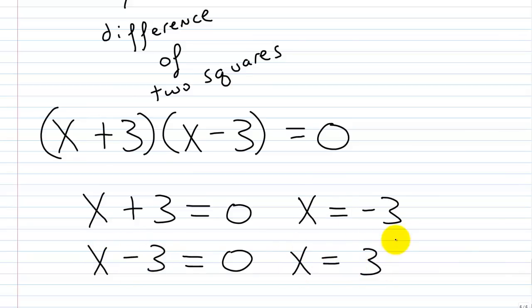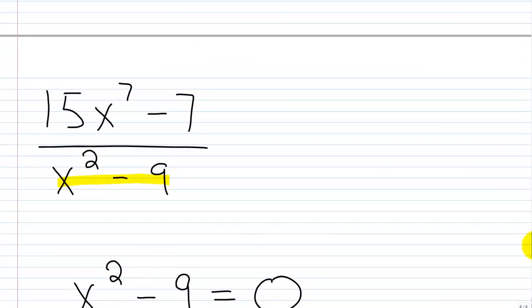So I have my restricted values: negative 3 and positive 3. Let me scroll up here, and we'll write that x cannot be equal to negative 3, x cannot be equal to 3. Because when you substitute those values in for x, you're going to end up with a denominator that's 0, and that's not allowed.